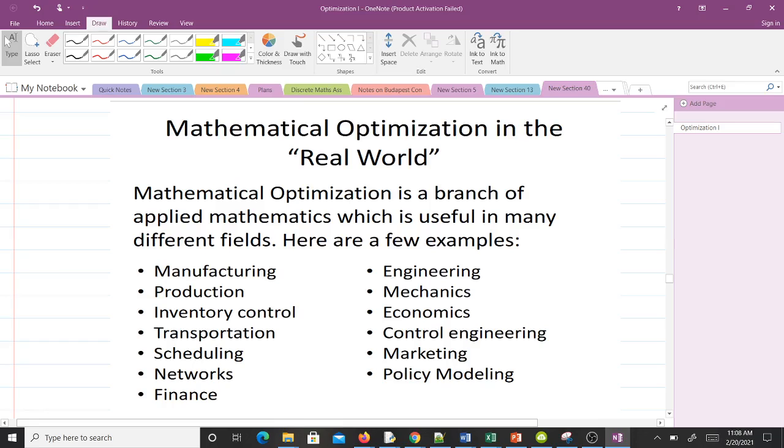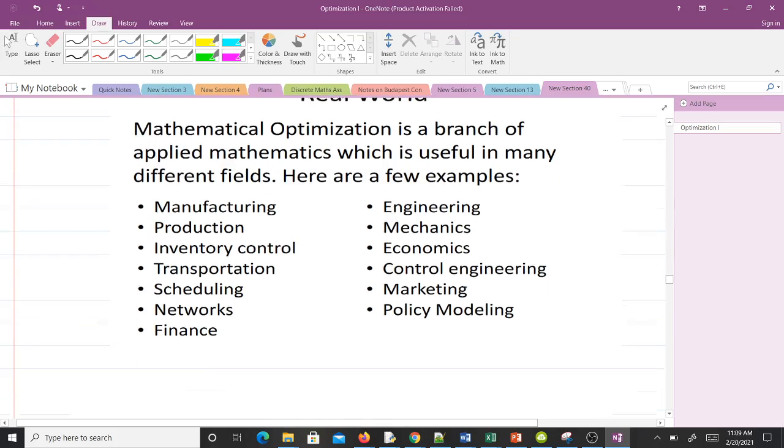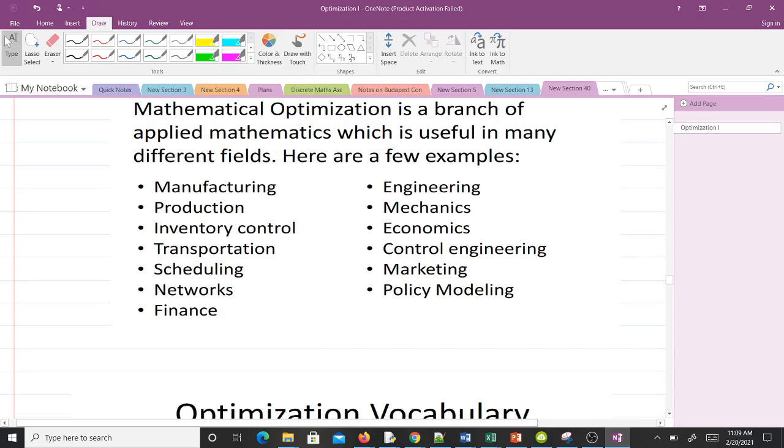Let's look at mathematical optimization in the real world. Mathematical optimization is a branch of applied mathematics which is useful in many different fields. Here are some examples: in manufacturing, company production, inventory, transportation, scheduling; in engineering, economy, control engineering, policy modeling, and more.